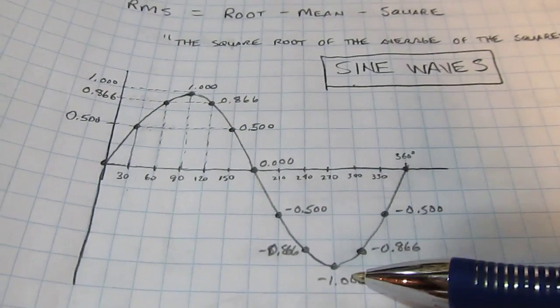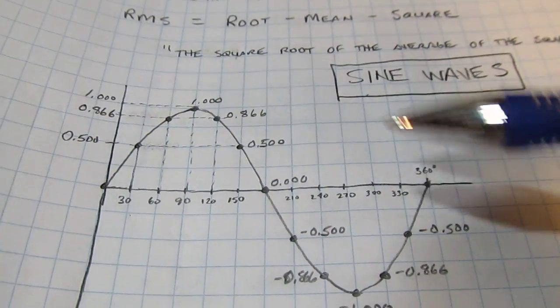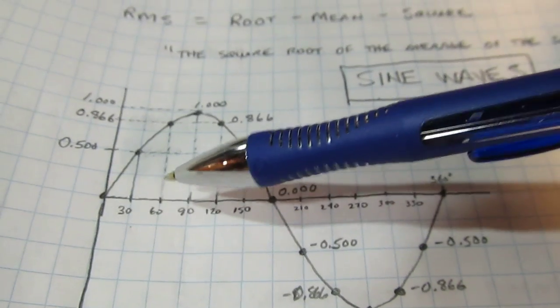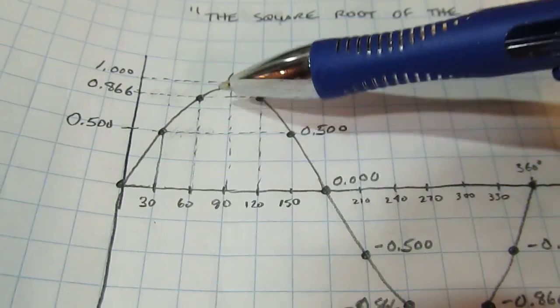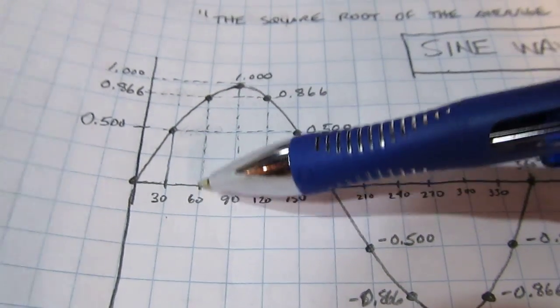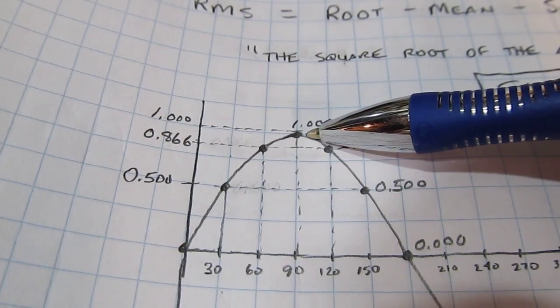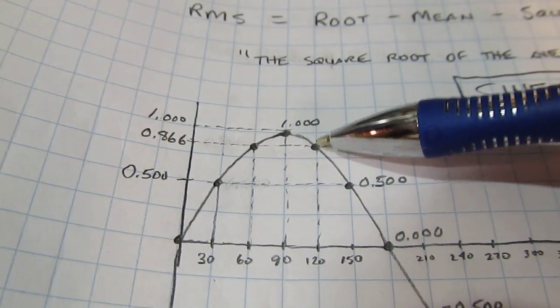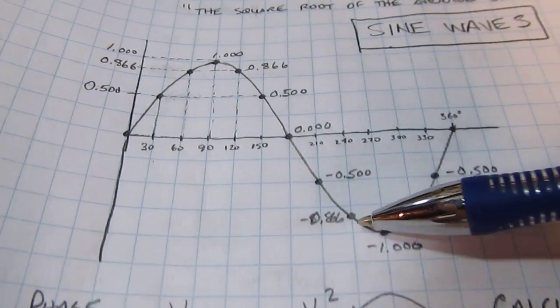Now for sine waves, let's picture a sine wave that looks like this. Let's consider one cycle of that. And if we look at the voltage every 30 degrees, at 30 degrees we're at half a volt, assuming a one volt peak. 60 degrees, we're at 0.866. 90 degrees, we're at a volt. And then as we work our way back down, these same voltages repeat: 0.866, 0.50, minus 0.5, et cetera.